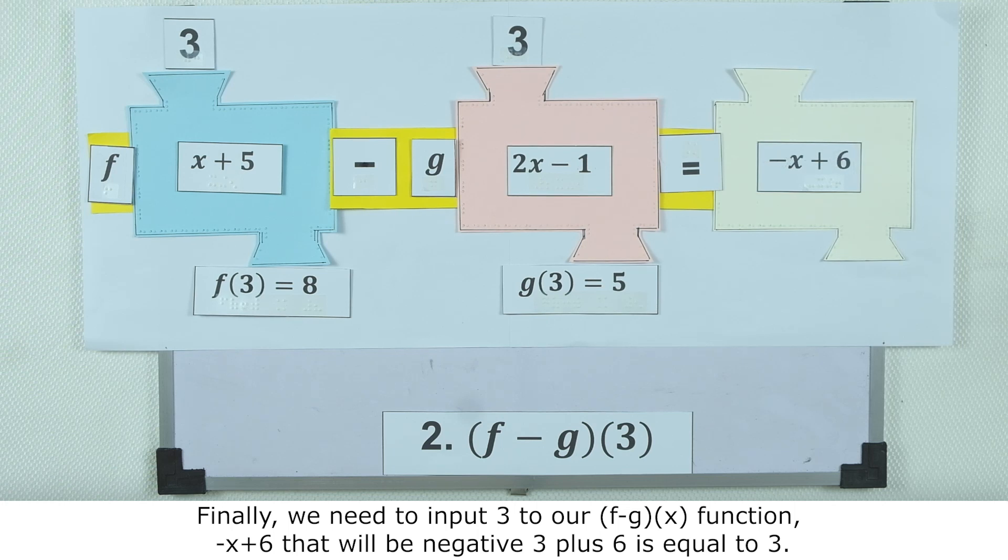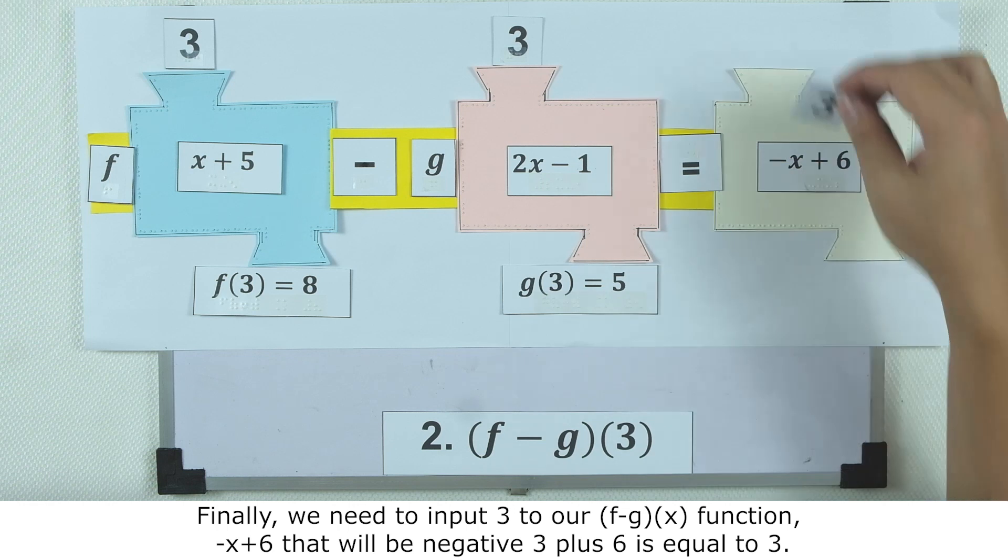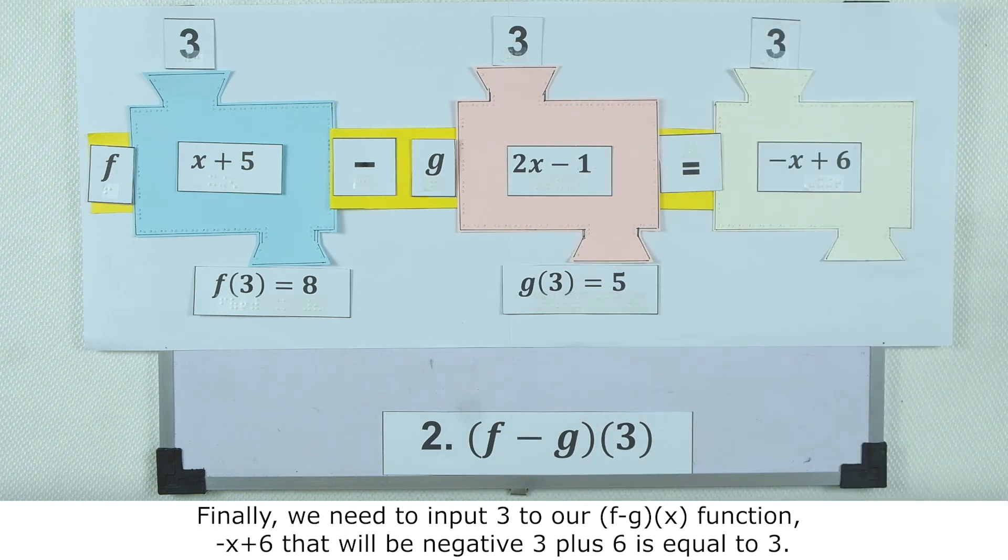Finally, we need to input 3 to our f minus g function, which is negative x plus 6. That will be negative 3 plus 6, which equals 3.